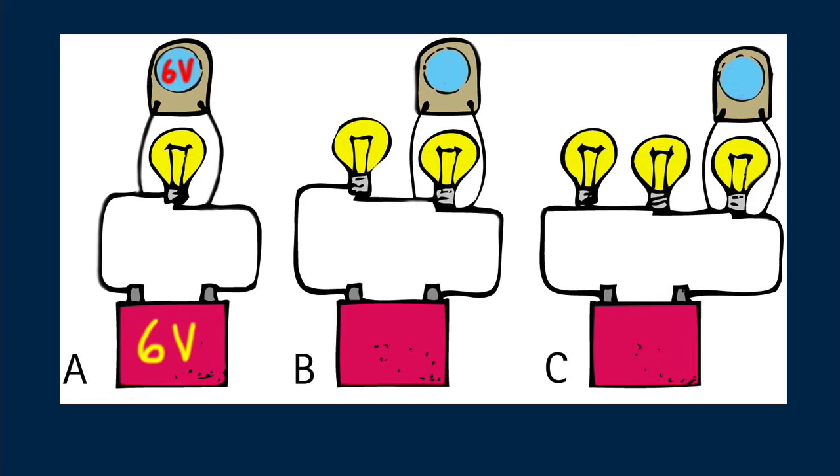How about circuit B with two bulbs? Can you see that the six volts is across both bulbs, and since resistances are equal, the voltmeter reads three volts? And how about circuit C with three bulbs? Can you see the voltmeter reads two volts because it measures the voltage across one-third the load fed by the battery?